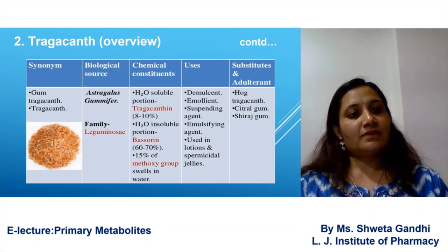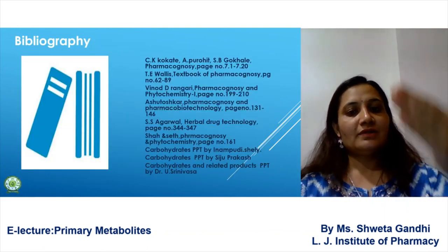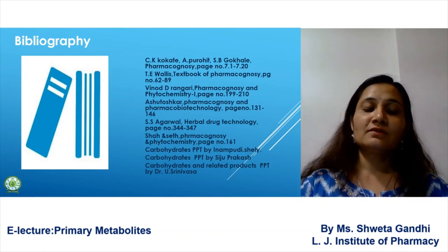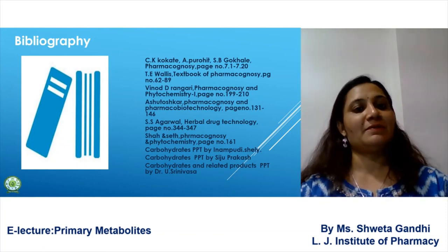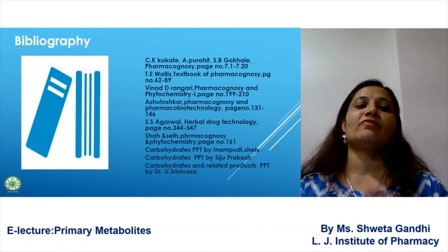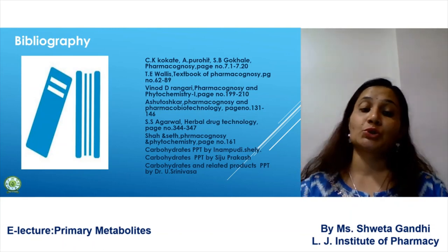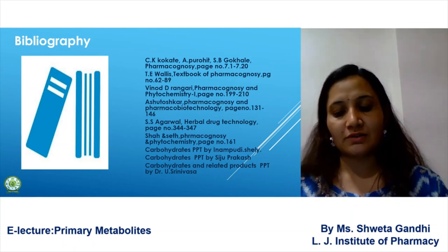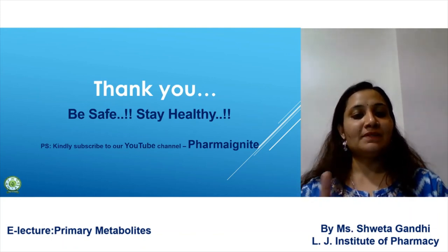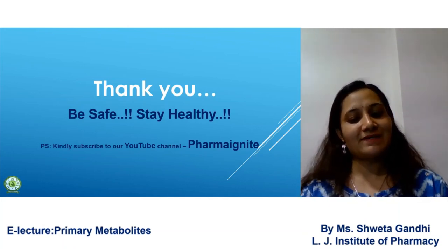These are the two drugs covered in part 1: acacia and tragacanth. The reference books for primary metabolites include Vinod Rangari, Ashutosh Kar, and C.K. Kokate, along with some review articles and PowerPoint presentations. Thank you — be safe, stay healthy, and please do visit part 2 of the primary metabolites.